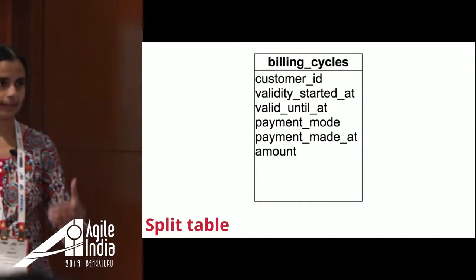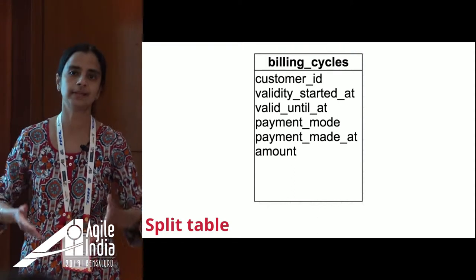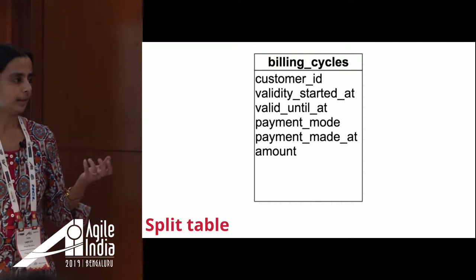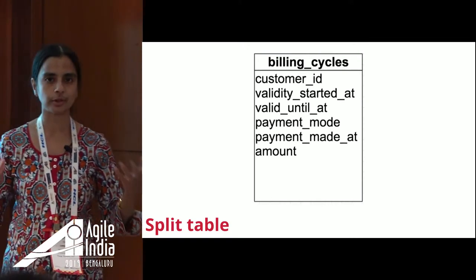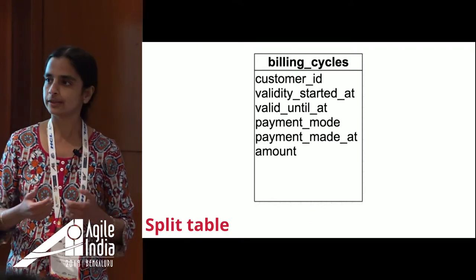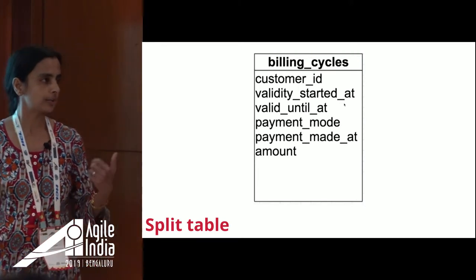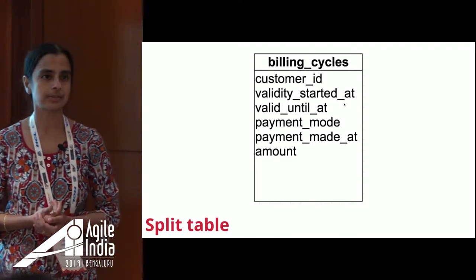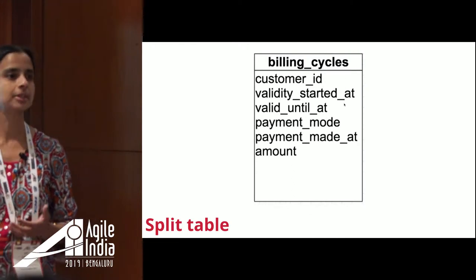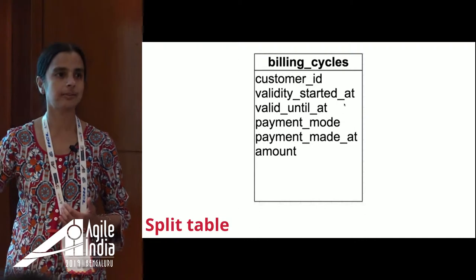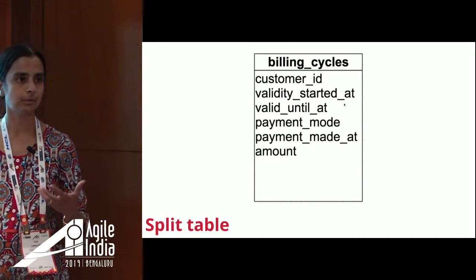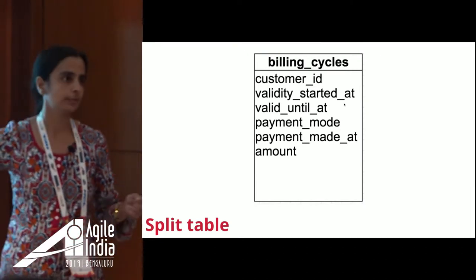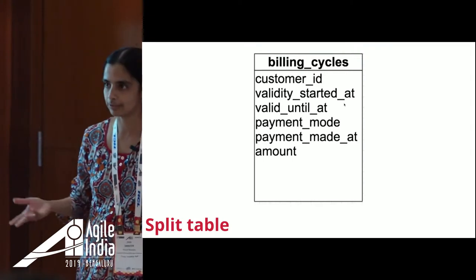These are real examples from our product — I've reduced the scope to make them easier to convey. We have the concept of people taking memberships with yoga studios. When we started, we called it billing cycles and had those fields in one database table. Then we got feedback that some members don't pay everything in one shot — they pay in installments, especially for yearly subscriptions. So a structure where all payment details are in one table won't work. We needed one cycle but multiple payments, so we had to split the table.